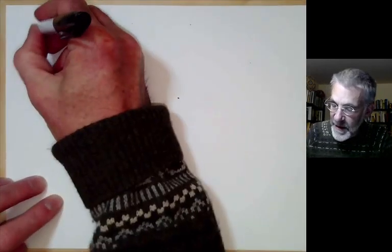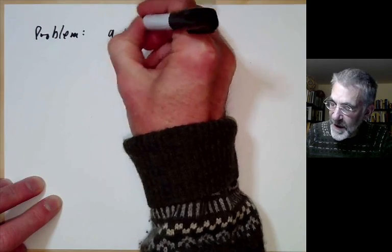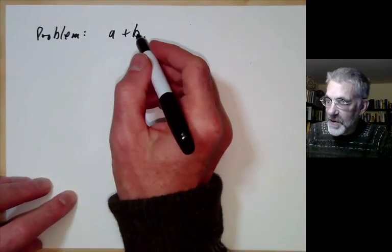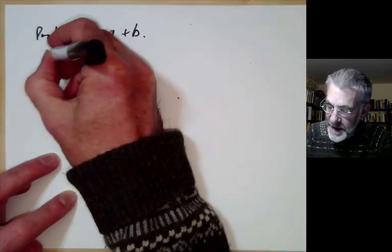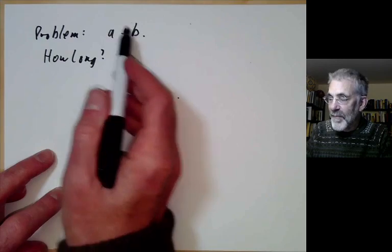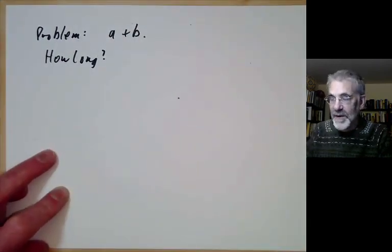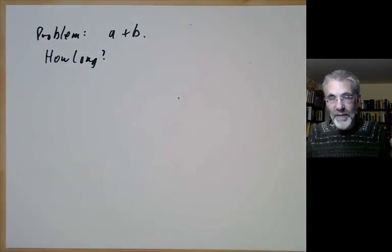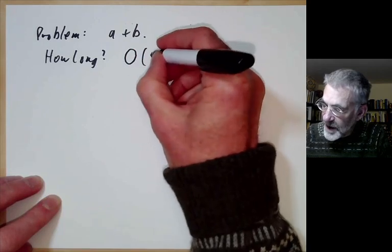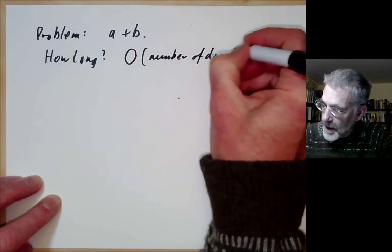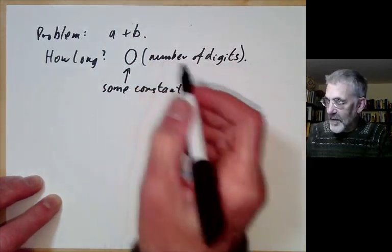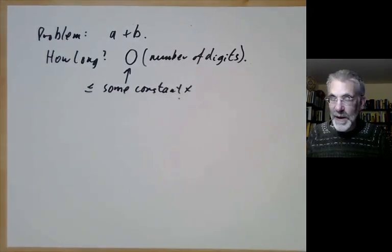Let's start with a very simple example: let's find A plus B. You all know how to add two numbers A and B. Using the usual algorithm, the number of operations is going to be about the number of digits of A and B, or maybe twice the number of digits. We're not interested in the exact constant multiplier, so what we do is use something called the O notation — it's O of the number of digits.